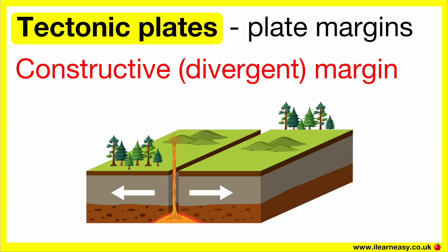Constructive plate margin, also known as divergent. This is when the plates move away from each other. This results in a gap in which the magma seeps through, cools down, and forms geological features such as volcanoes.